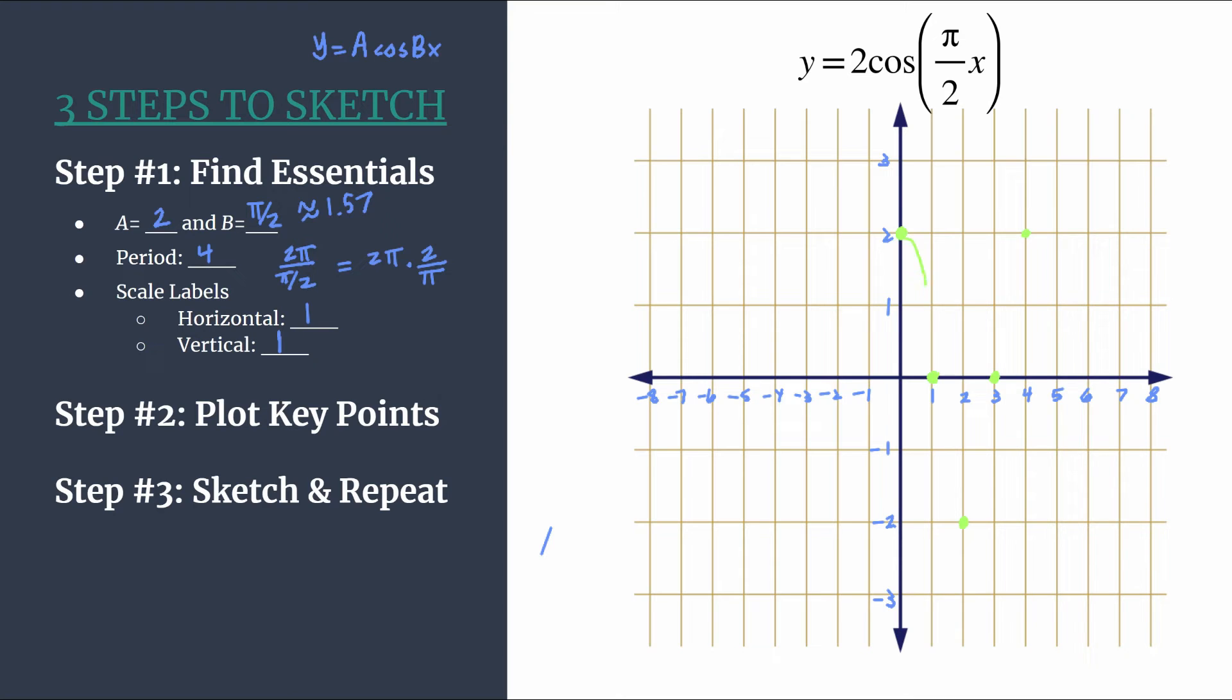Let's move into step 3 then. We're going to sketch. You see I already repeated just a little bit. I put that first point of a new cycle so that we could draw a really nice cosine curve here. And we have one cycle of cosine. You see the period is clearly 4 because it took 4 units horizontally to complete a cycle.